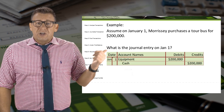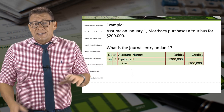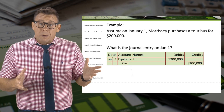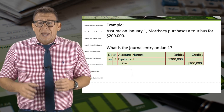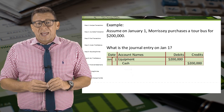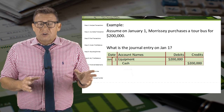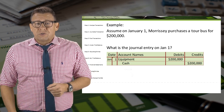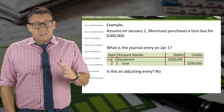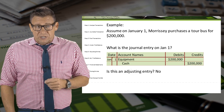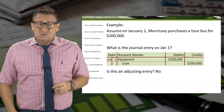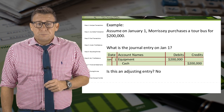The journal entry on January 1 is a debit to the asset account equipment and a credit to the asset account cash for $200,000. This is not an adjusting entry because there is an underlying transaction that happened on January 1.